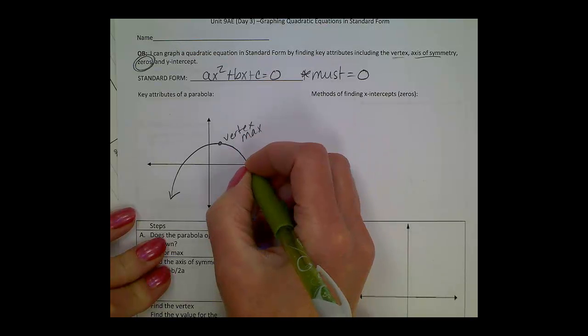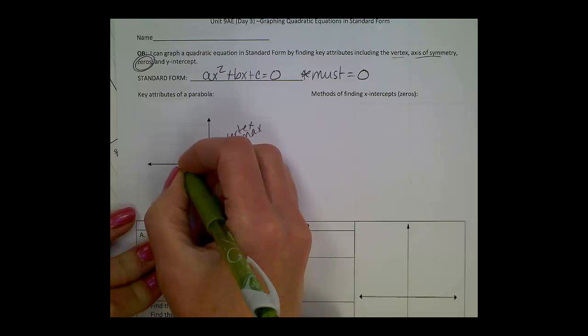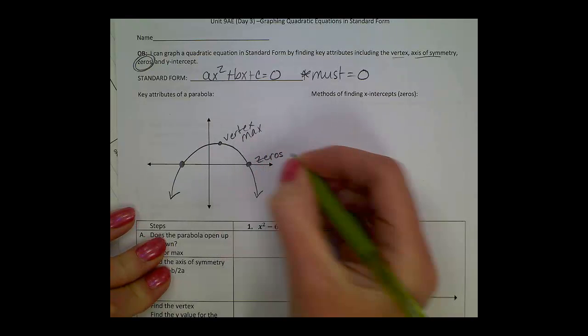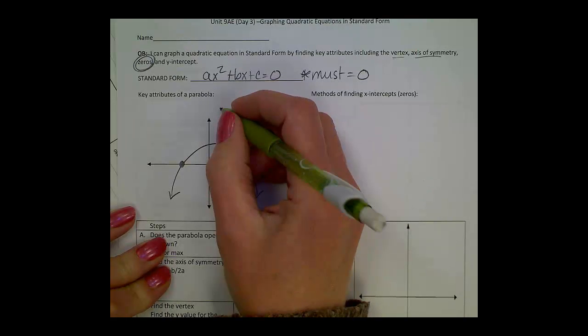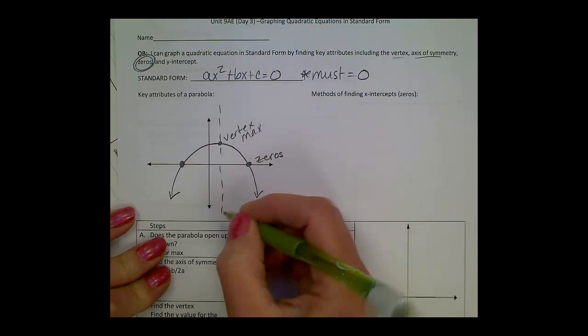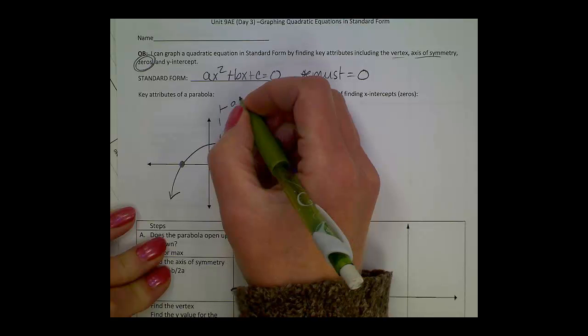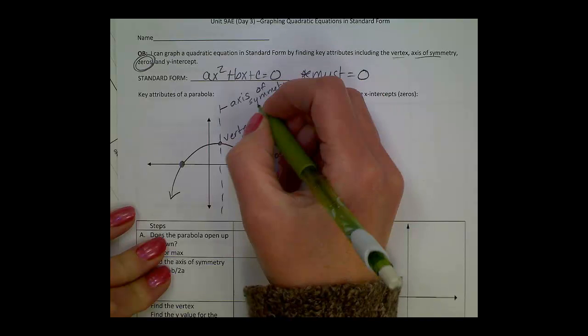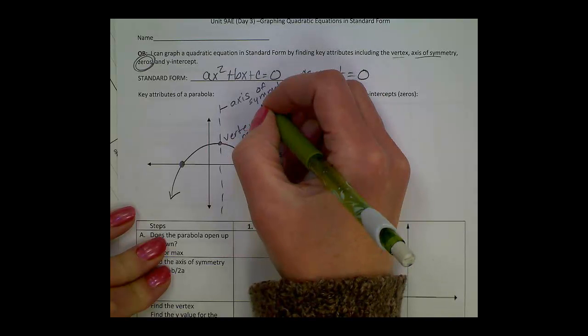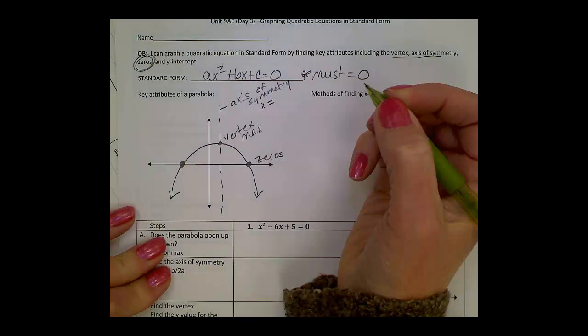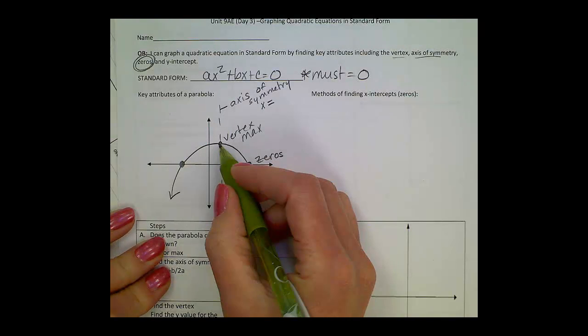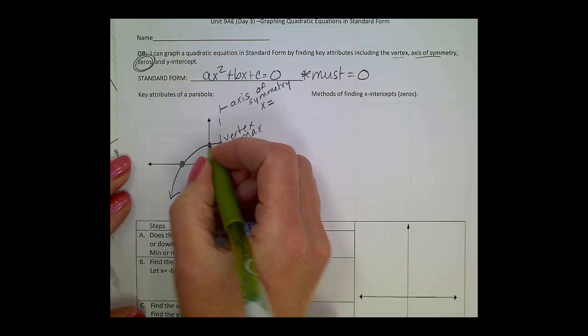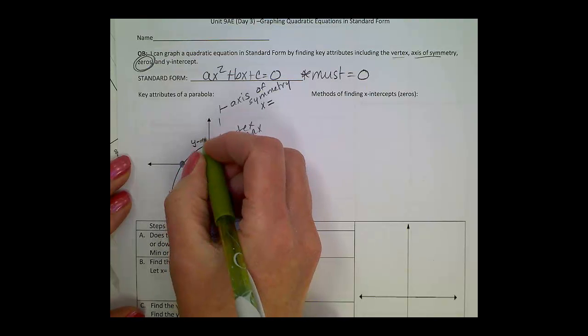Today's lesson, we're focusing on these x-intercepts, also known as zeros, and some other words. Remember, axis of symmetry right through the center. When we write the axis of symmetry, it's an x equals equation. Vertex is an ordered pair, zeros are ordered pairs. The only thing I'm missing is the y-intercept, also listed as an ordered pair.